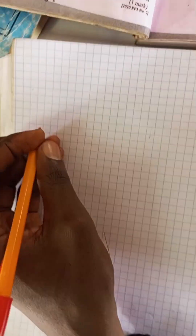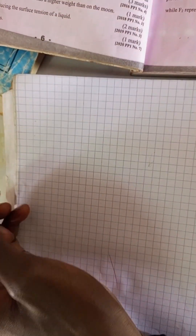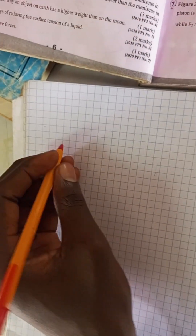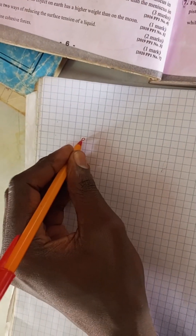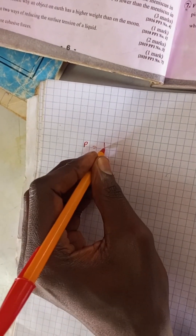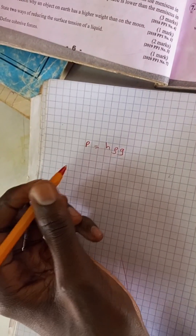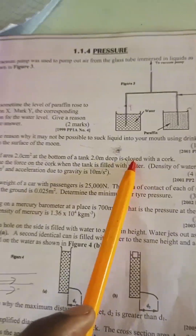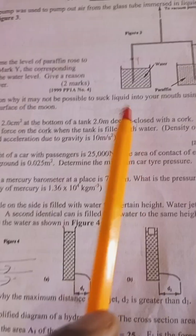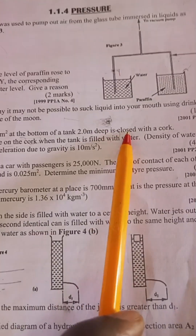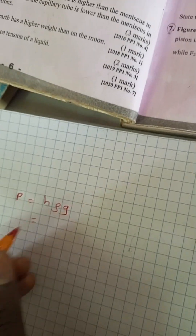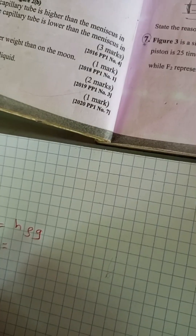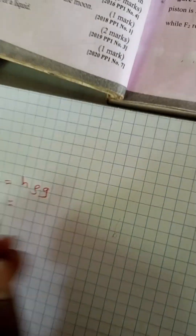Since the tank is closed, we want to find the pressure on the water. Pressure on water is equal to h·ρ·g. We do not have atmospheric pressure because the tank is closed — there is no action of atmospheric pressure.